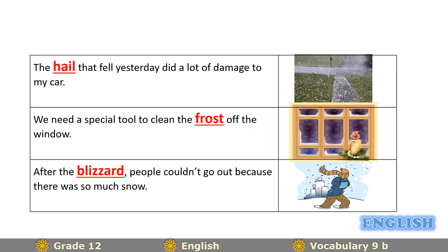The first sentence says: 'The hail that fell yesterday did a lot of damage to my car.' Looking at the picture, hail refers to small balls that fall from the sky. The second one — frost — is a thin white layer of ice. The third picture: a blizzard is a storm with a lot of snow and strong wind.